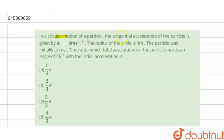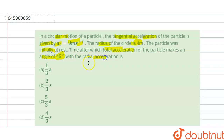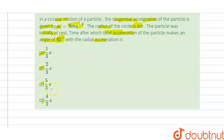In circular motion of a particle, the tangential acceleration is given as 9 meters per second squared. The radius of the circle is 4 meters. The particle is initially at rest. We need to find the time after which the total acceleration of the particle makes an angle of 45 degrees with the radial acceleration. Options a, b, c, d are given.